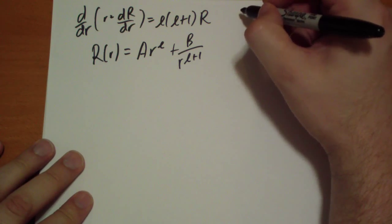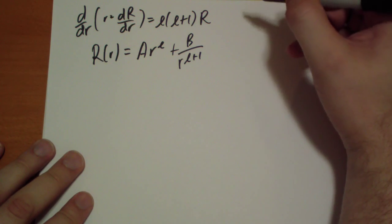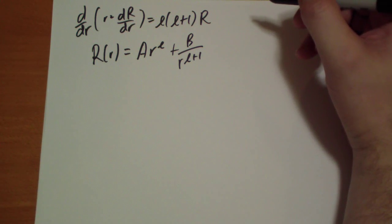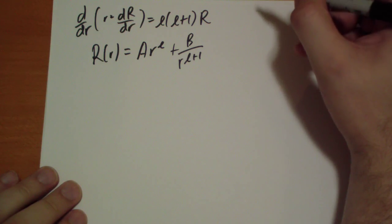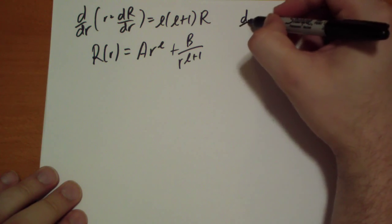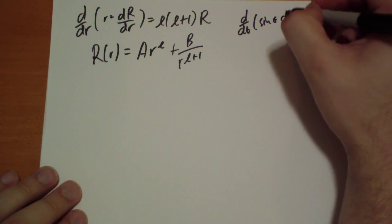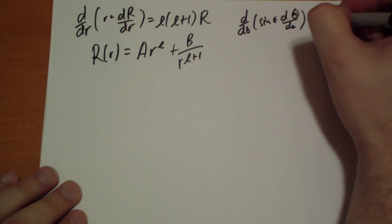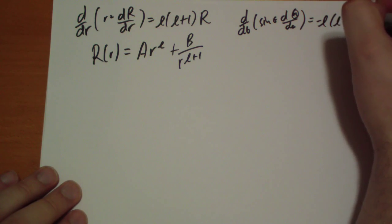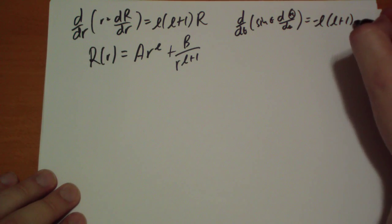For the theta term, we get d by d theta of sin theta d capital theta by d theta is equal to minus l times l plus 1 sin theta times capital theta. Okay?